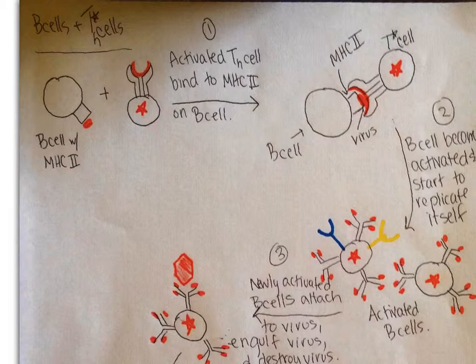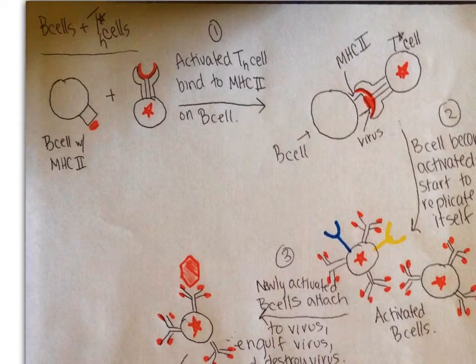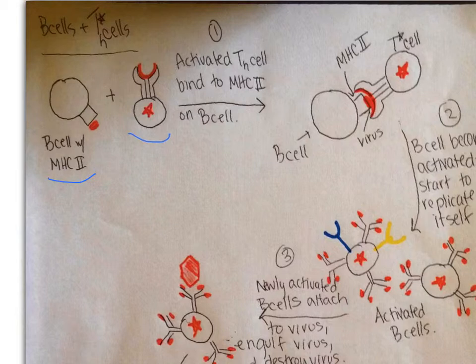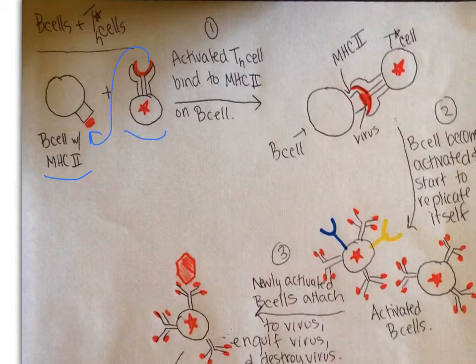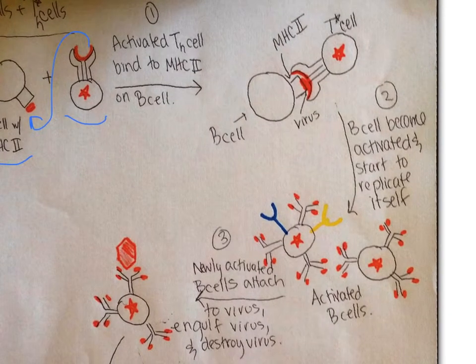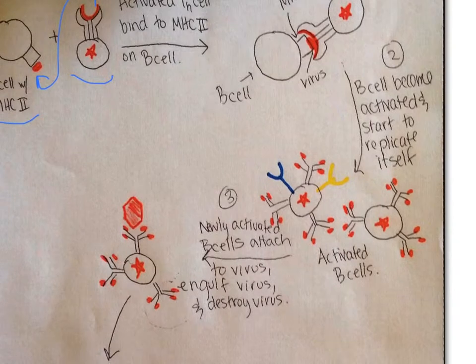So now we show the interaction between B cells and T cells. Here we have our B cell with our MHC-2, and then we have our activated T cell. The activated T cell is going to bind to the virus that's on the outside of the B cell. And we show them coming together.